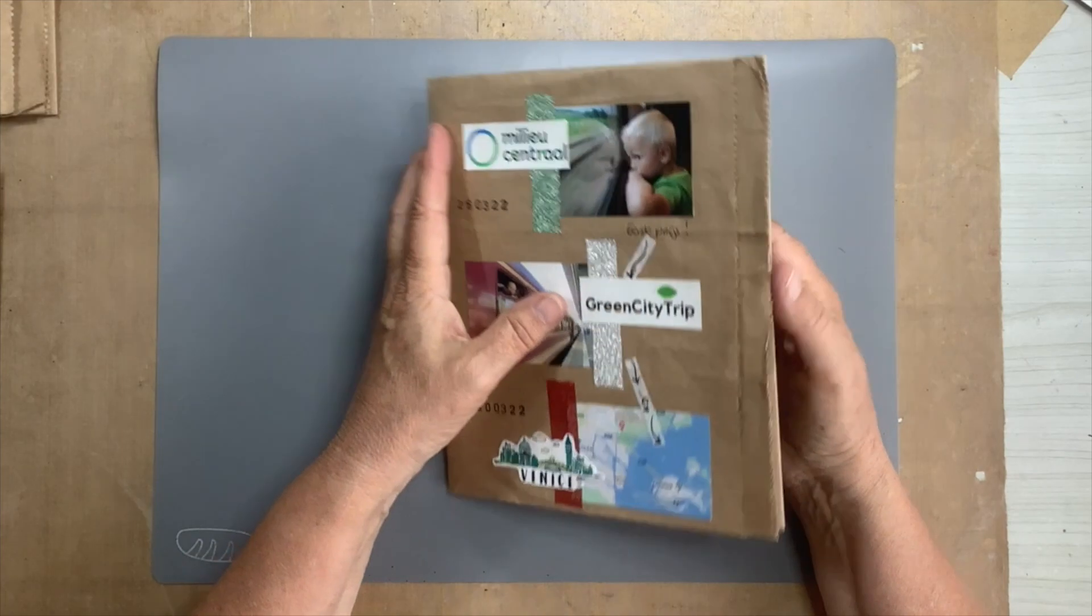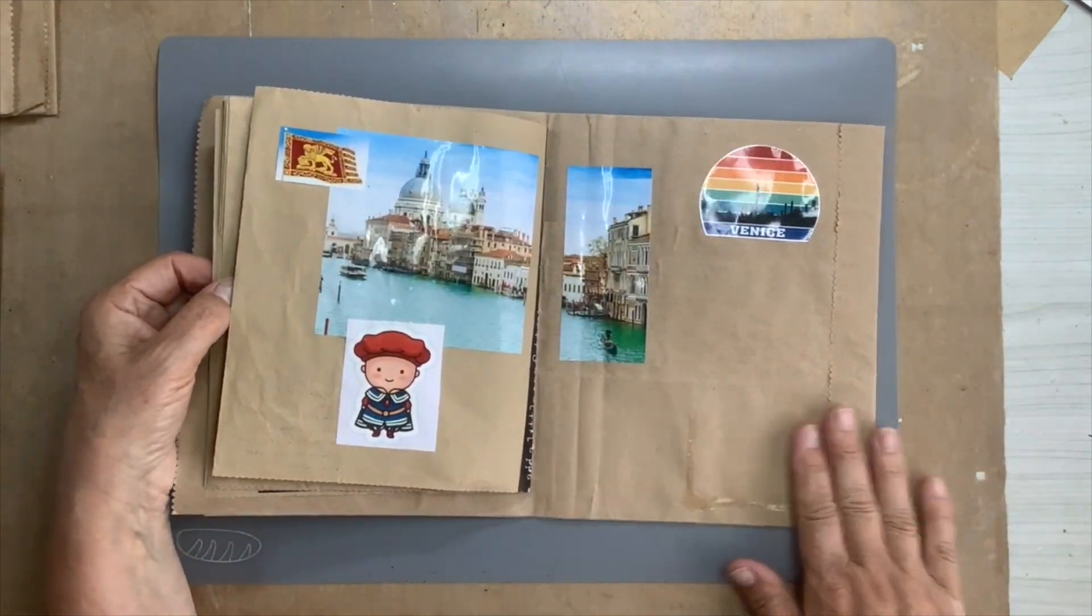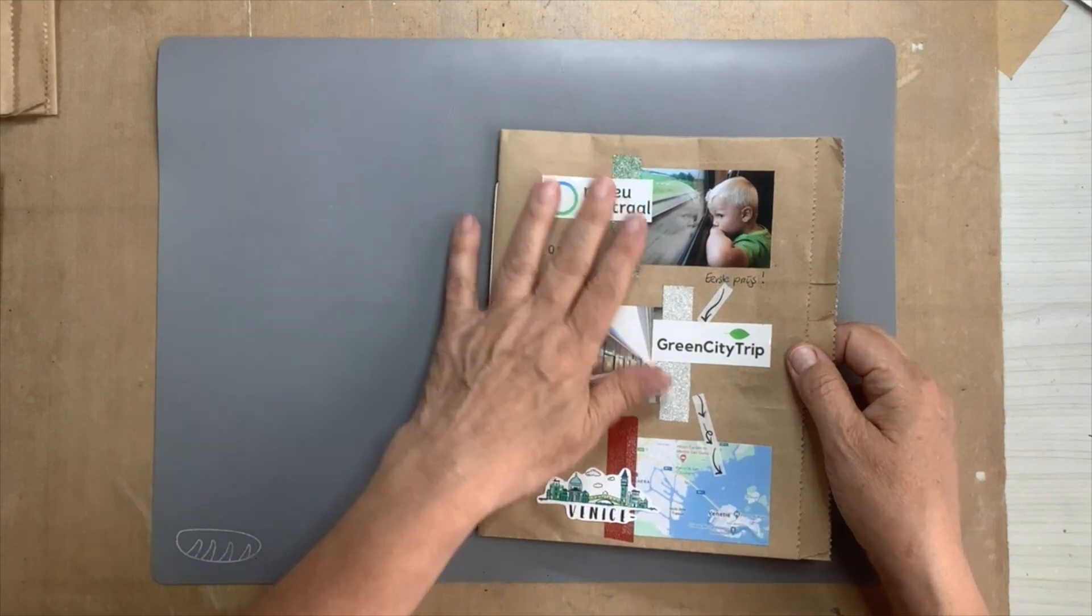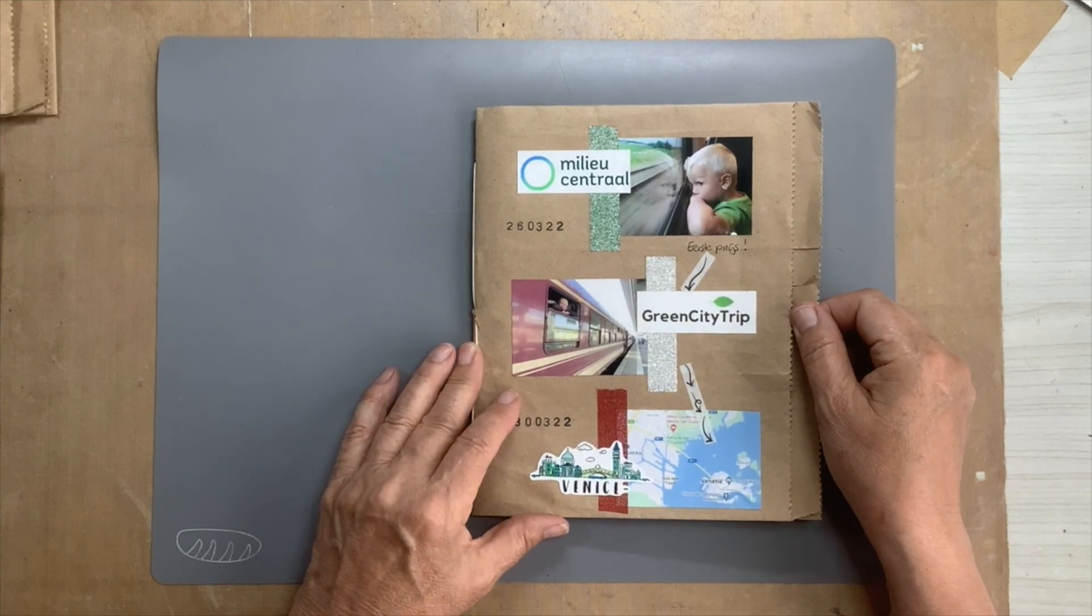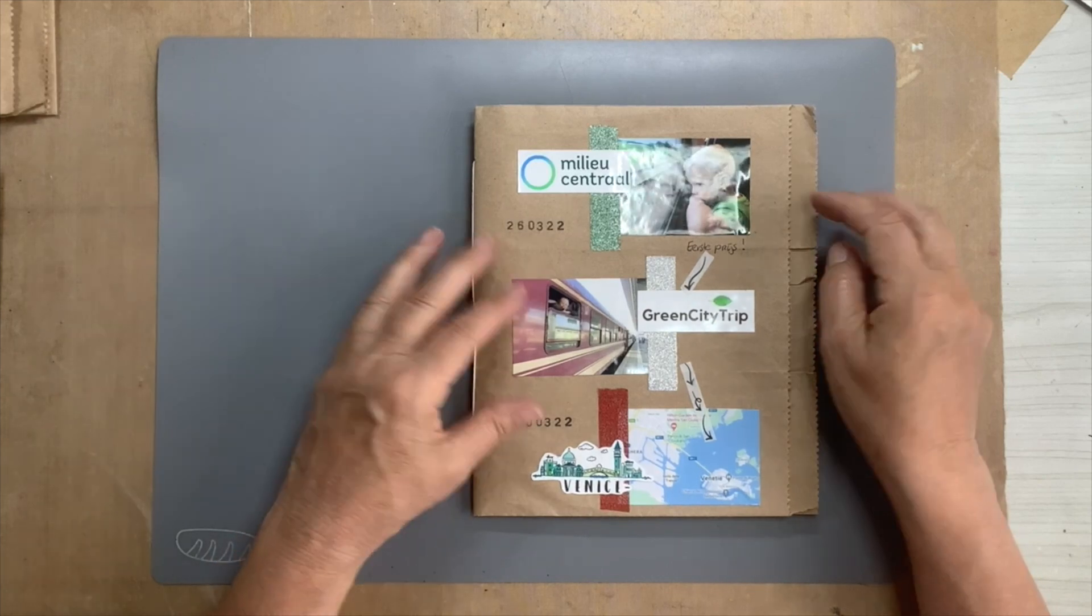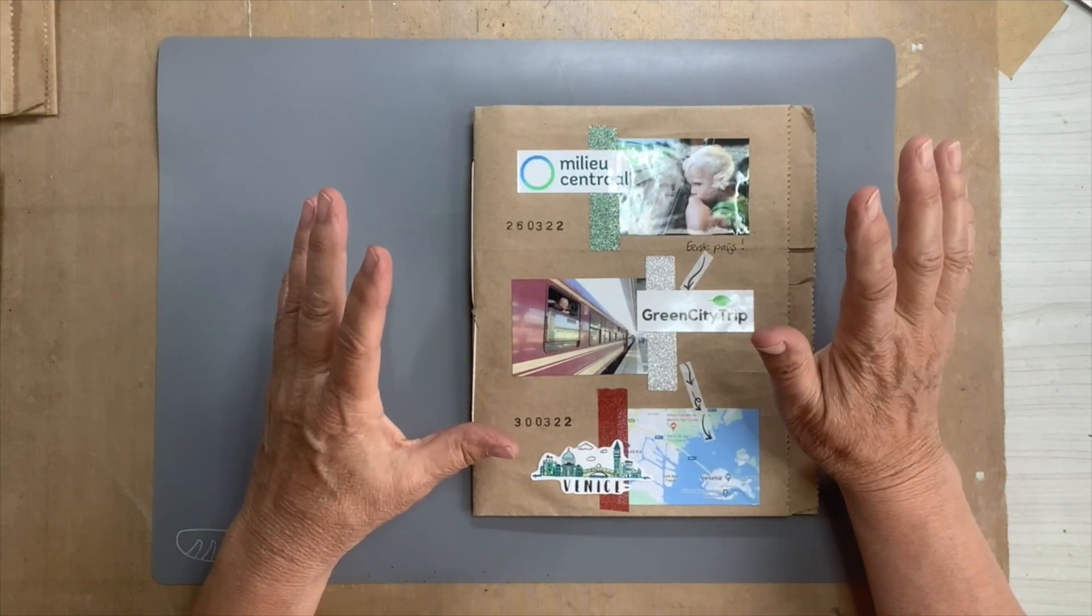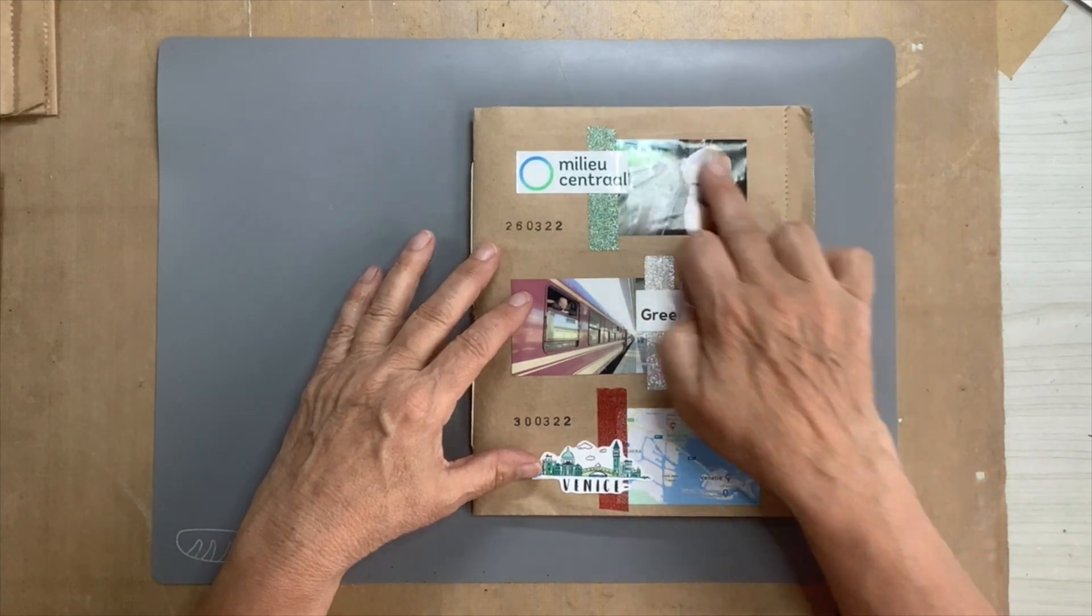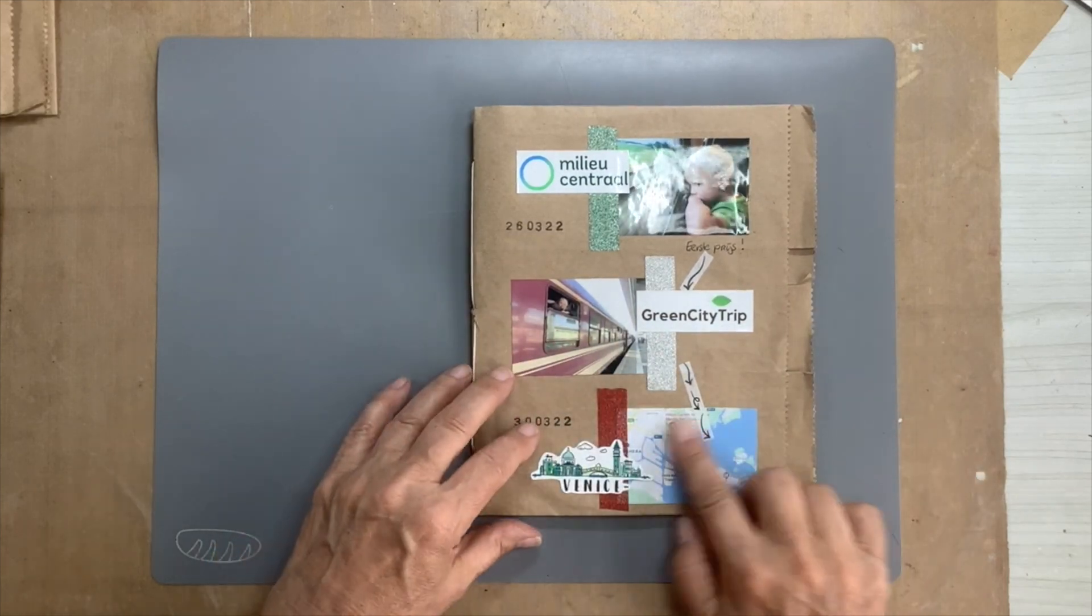This was the journal I made when I went to Venice. I have a few things to glue in, but it's almost ready I think. But I promised a flip through, so let's do it now. This is the winning photo. It was a photo contest and I won the trip to Venice and I took my daughter with me. This was the winning photo. This was the train in which we went to Venice and this is Venice.